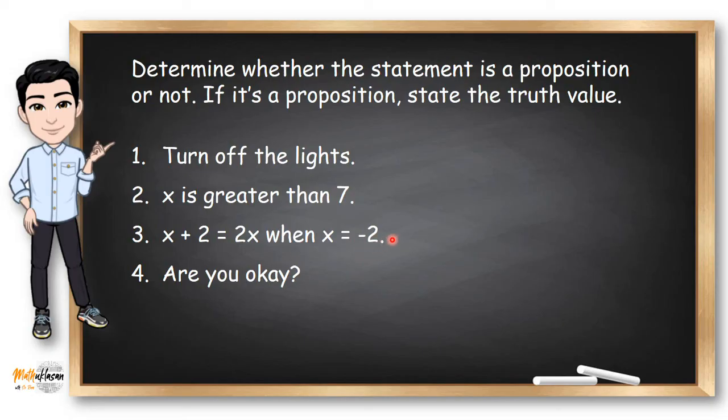So if this is a proposition, what is its truth value? If X is negative two, negative two plus two is zero. Two times negative two is negative four. And we all know that zero is not equal to negative four. Therefore, this is a proposition with a false value.